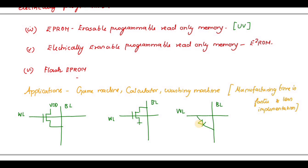A disadvantage of the diode-transistor cell is that it doesn't isolate the bitline from the wordline — all the current required to charge the bitline capacitor, which can be quite high for larger memories, has to be provided through the wordline and its driver. Therefore, the diode cell is mainly used in smaller memories.